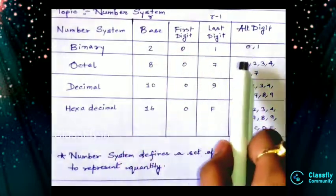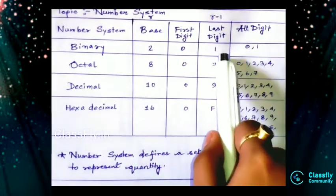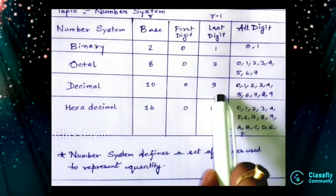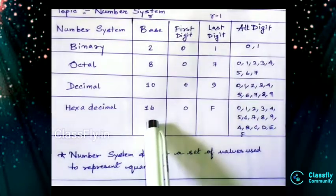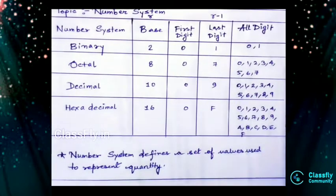r minus 1 meaning base. If it's r, then 1 less of r will be its last digit. See, 2 minus 1 is 1, 8 minus 1 is 7, 10 minus 1 is 9, 16 minus 1 is 15.